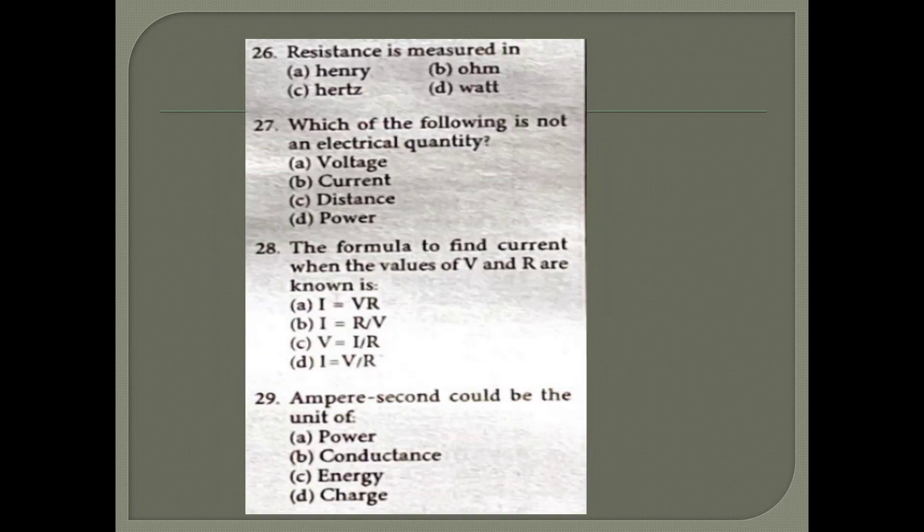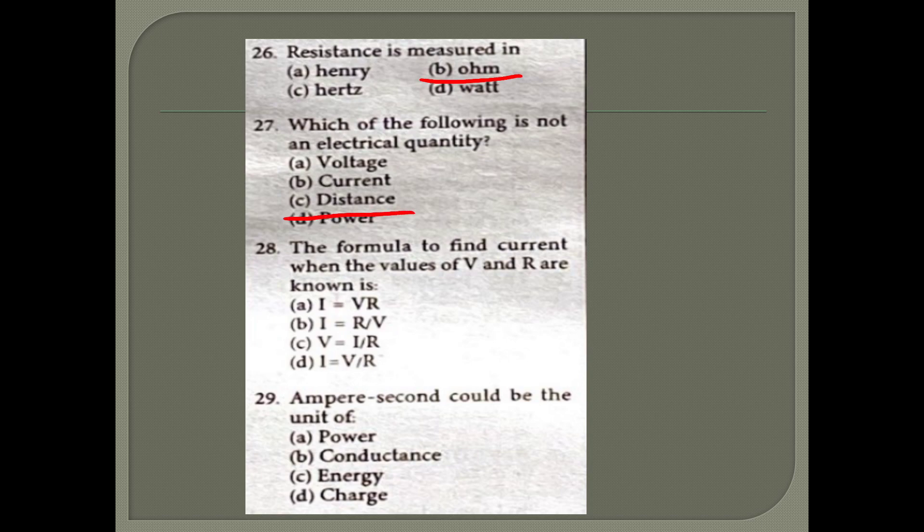Resistance is measured in ohm. Which of the following is not an electrical quantity? Distance is not an electrical quantity. The formula to find current when the value of V and R are known: I equals V by R.